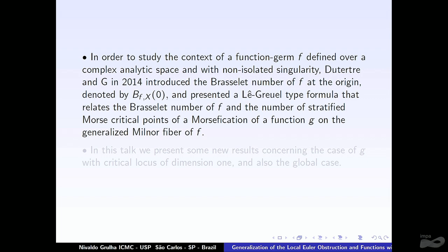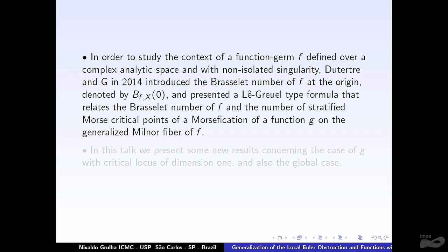One of the possible generalizations is called the Euler obstruction of a function. After that invariant was defined, Seade, Tibăr, and Brasselet proved that this invariant counts the number of Morse points of a Morseification of f on the regular part of the variety. So it's really very close to information we have from the Milner number in the smooth case. While working with Nicolas, we were trying to find a kind of Lê-Greuel rule or formula for the Euler obstruction of a function, and during this work we found an invariant that we called the Brasselet number.